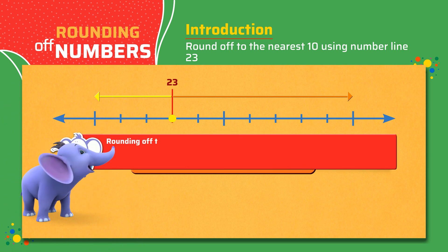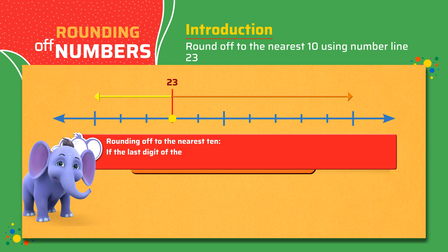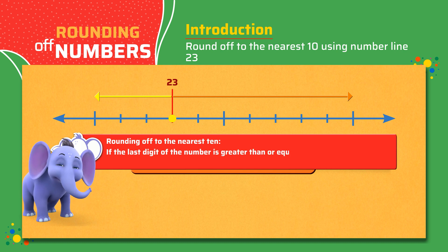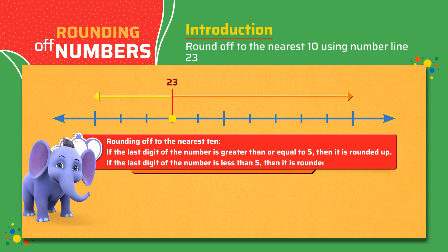Rounding off to the nearest 10. If the last digit of the number is greater than or equal to 5, then it is rounded up. If the last digit of the number is less than 5, then it is rounded down.